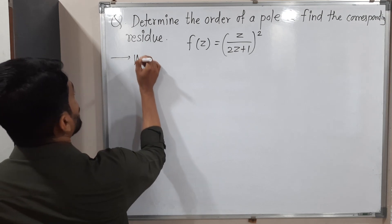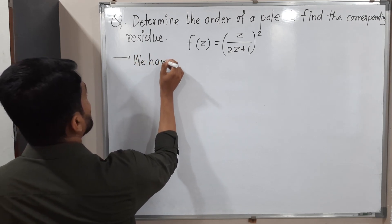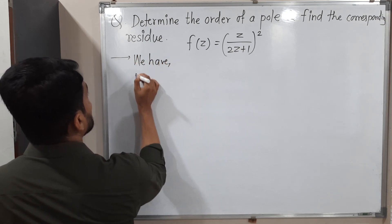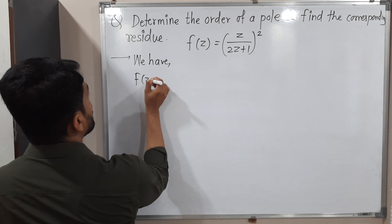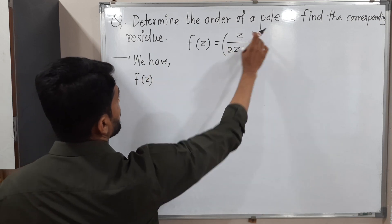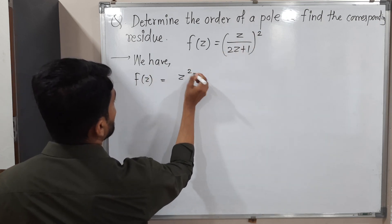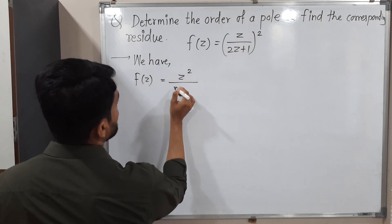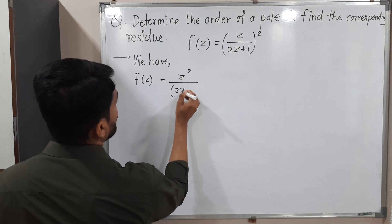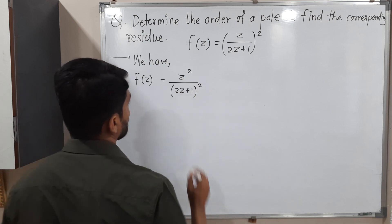Actually the numerator and denominator have power two, so I will write a separate power so it will be easy to understand. The function has (2z + 1) squared.